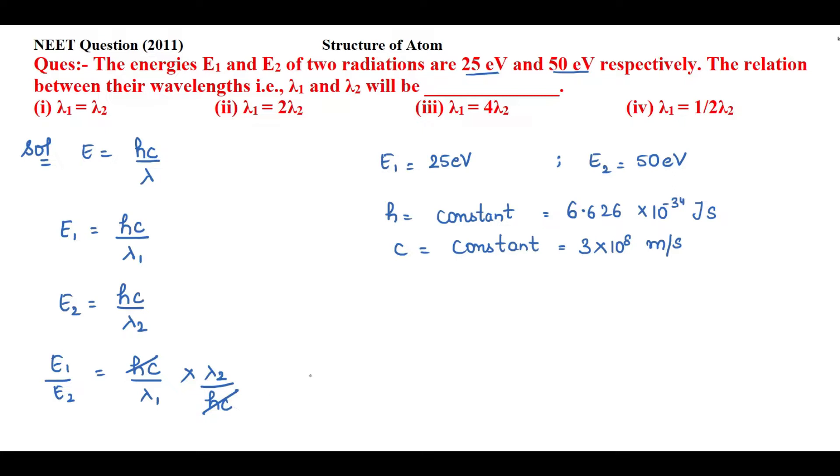Now put the values of energy: 25 electron volts divided by 50 electron volts equals λ₂/λ₁. I'll cancel electron volts, and 25/50 reduces to 1/2. Now we will cross multiply these values, so λ₁ × 1.